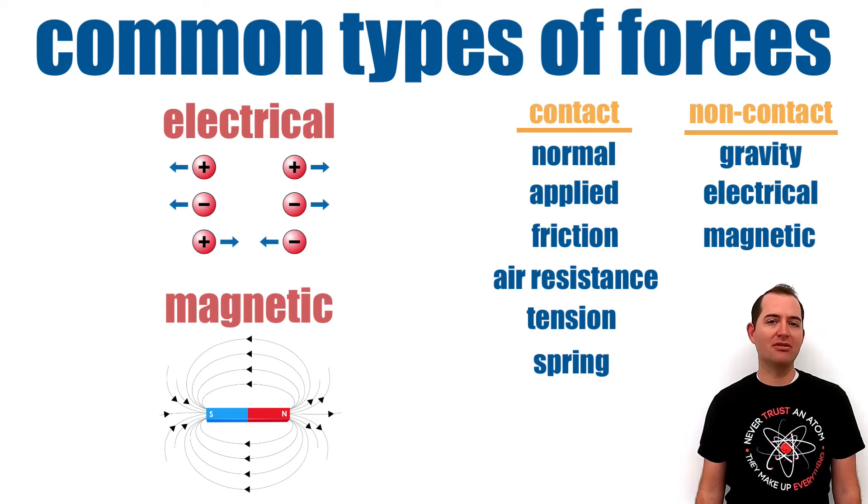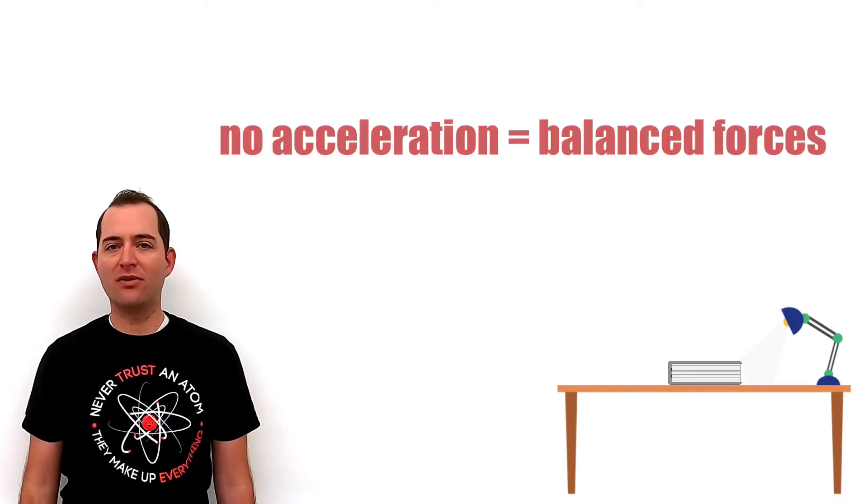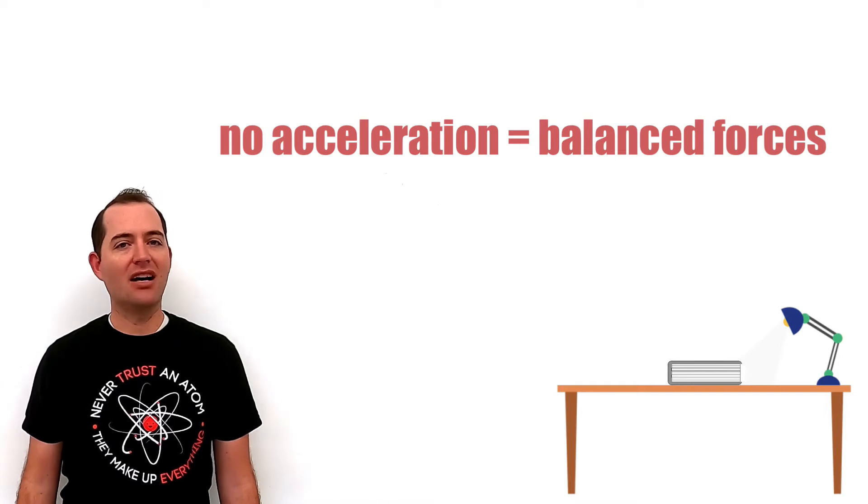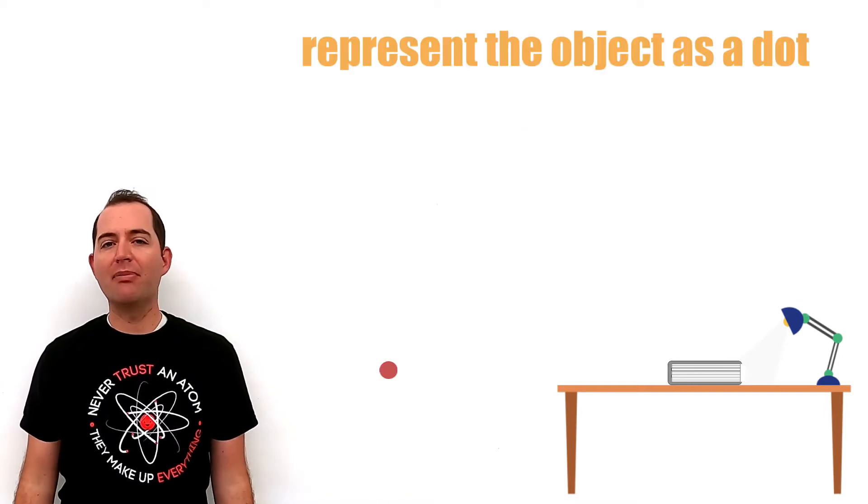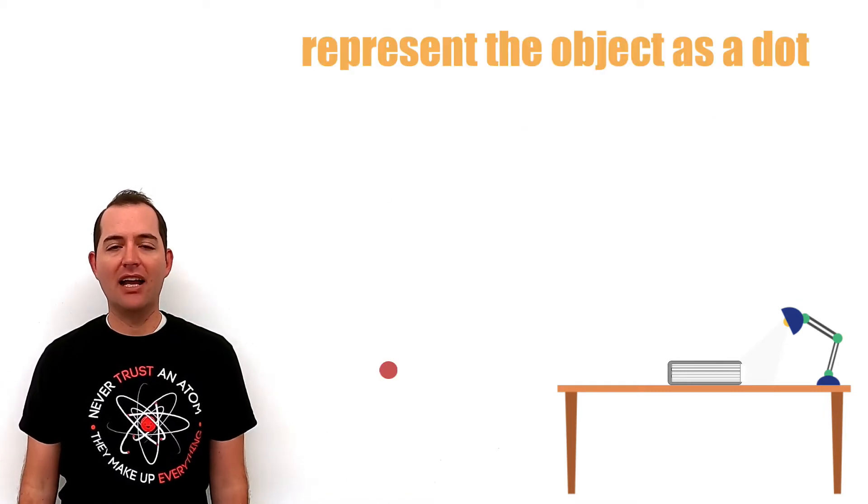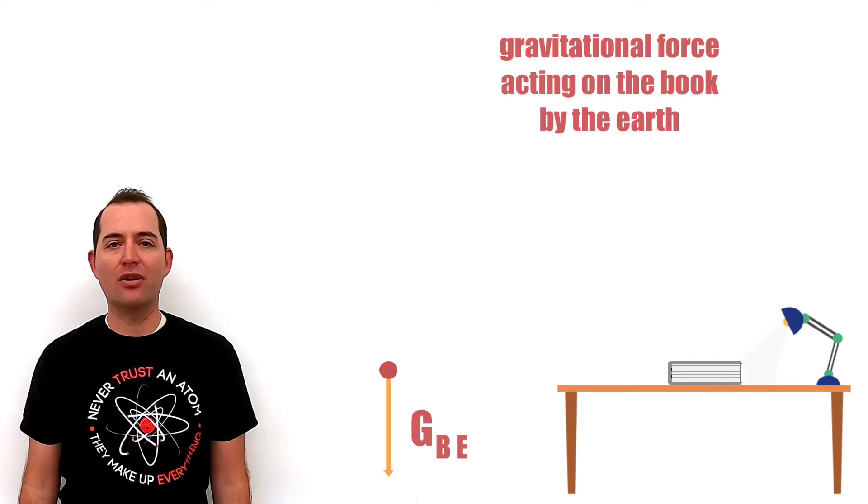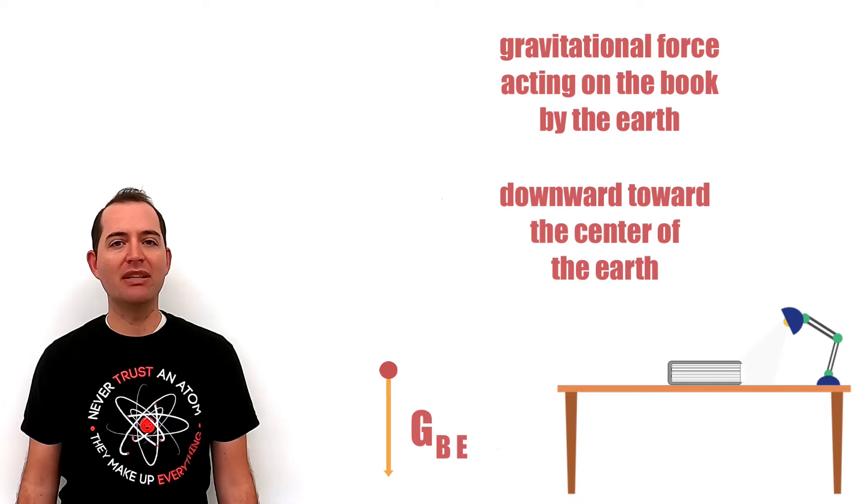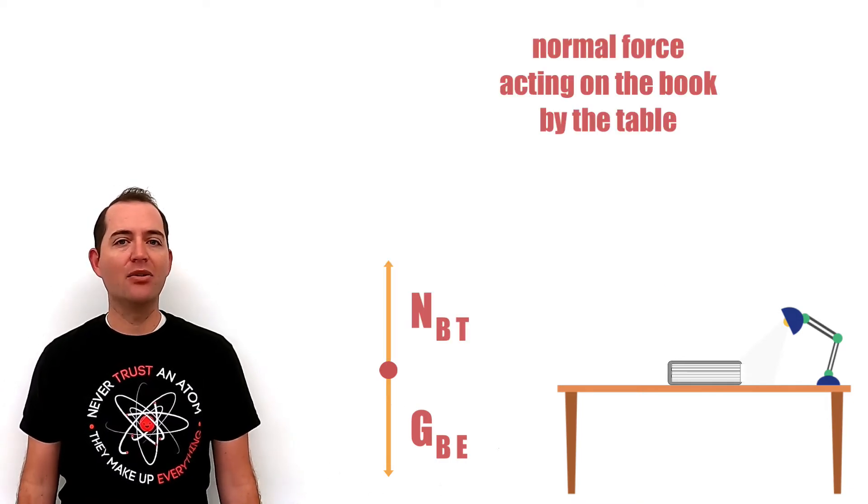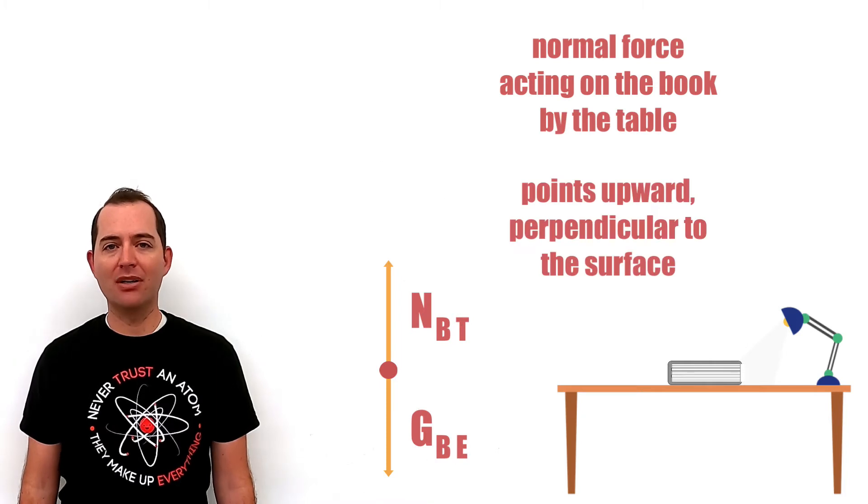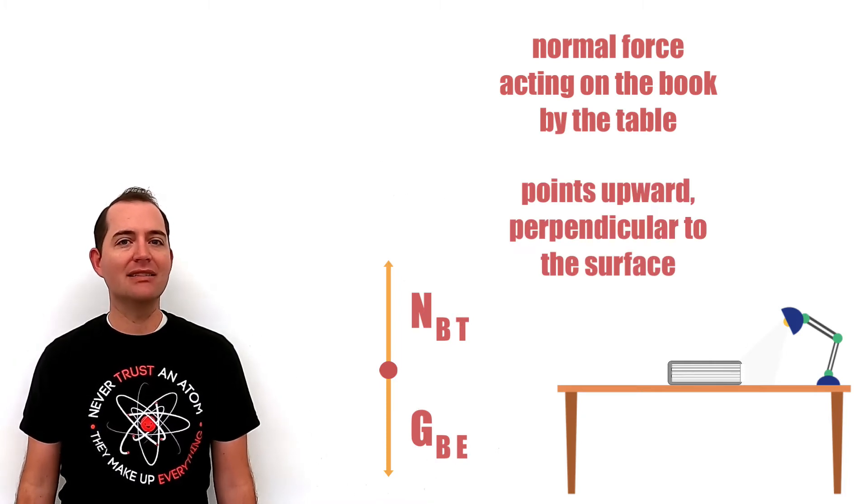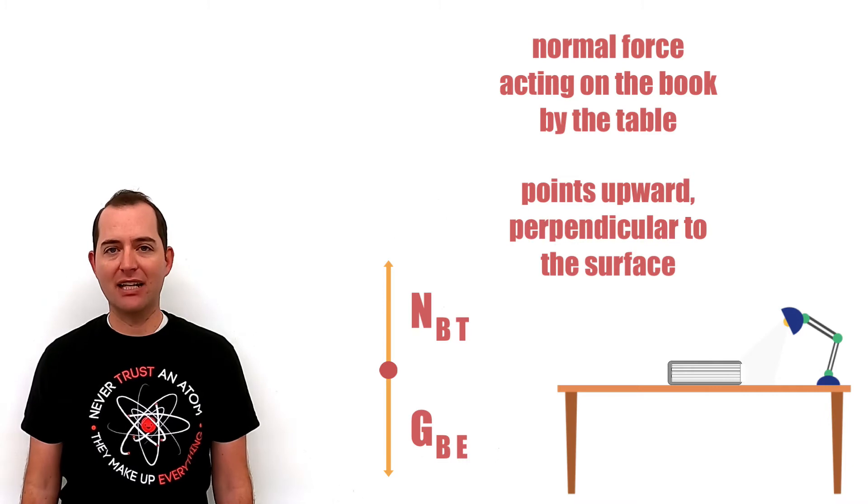Let's look at a couple examples to build some free body diagrams. Let's start with the book resting on a table. We know that this will have balanced forces because the object is not accelerating. First we will represent the book as a dot and it will have a gravitational force acting on the book by the earth and this force will be downward toward the center of the earth. We will also have a normal force that points upward on the book by the table. This is perpendicular to the surface of the table.